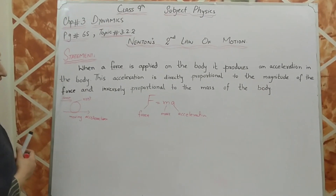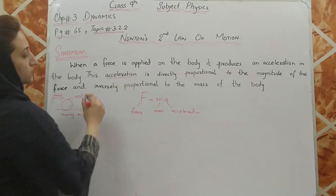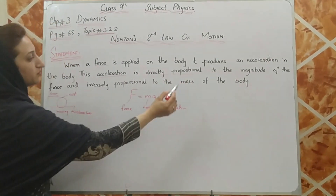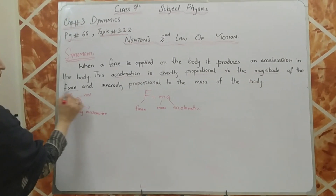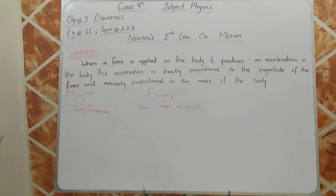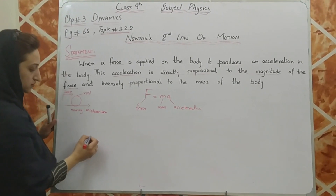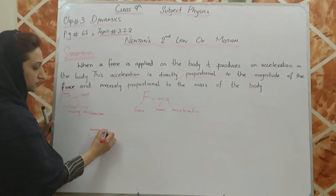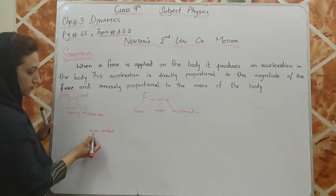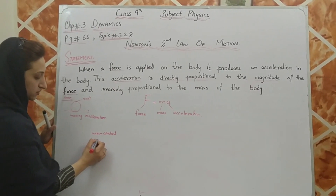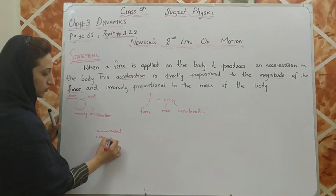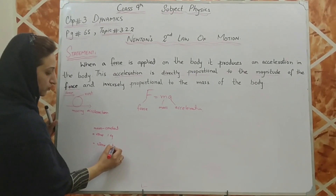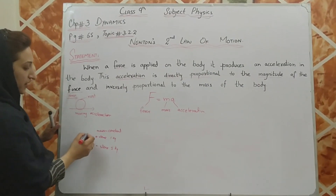So the first line of the statement is justified: we apply a force and it produces an acceleration in the body. For the second line — acceleration is directly proportional to the magnitude of the force — I will justify this with an example where mass is kept constant. I am taking a stone of 1 kg in both cases; the mass of the stone is the same.